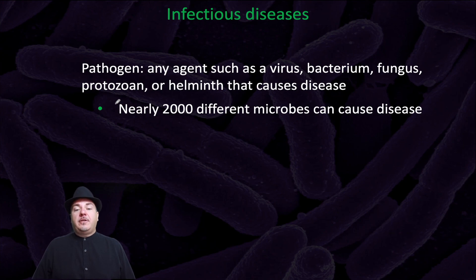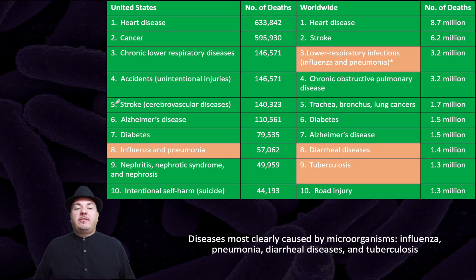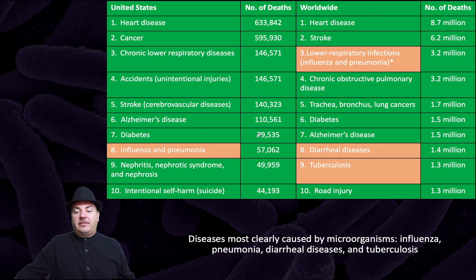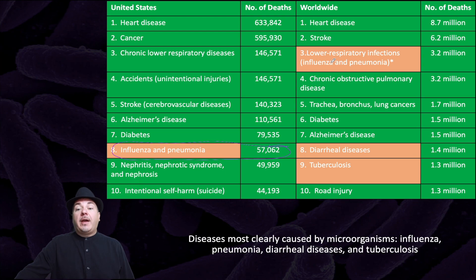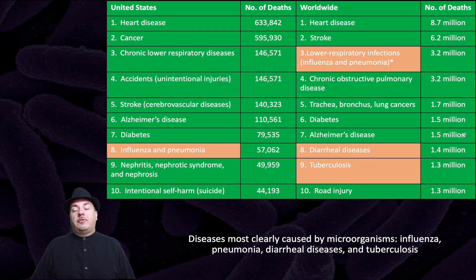When talking about the interaction between microbes and humans, we also need to discuss infectious diseases. A pathogen is any agent — such as a virus, bacteria, fungus, protozoan, or helminth — that causes disease. There are nearly 2,000 different microbes that can cause disease. Here's a chart showing the main causes of death both in the United States and worldwide. In the United States, a developed nation, our major causes of death are not typically microorganisms, though influenza and pneumonia do appear. However, worldwide — which includes developing nations — microorganisms causing influenza, pneumonia, diarrheal diseases, and tuberculosis account for a much higher percentage of deaths and appear among the top 10 causes of death worldwide.